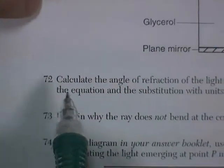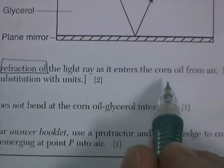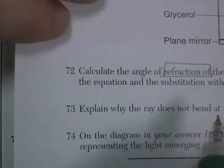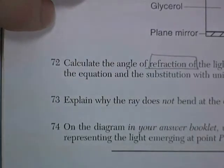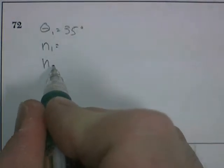Question 72. Calculate the angle of refraction of the light ray as it enters the corn oil from the air. Show your work, including the equation, units, and substitution. All right. So we know that the angle it hits at, the angle of incidence, is equal to 35 degrees. It's in air, so it has an index of refraction of something, and it's going into corn oil, which has an index of refraction of something different.